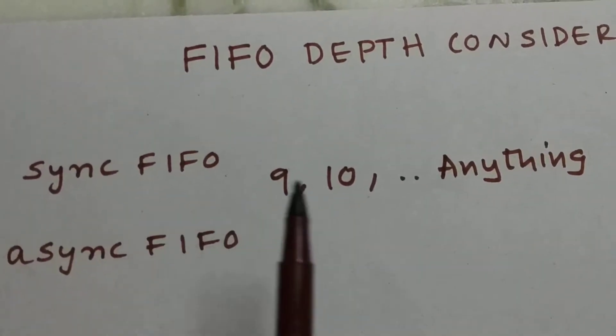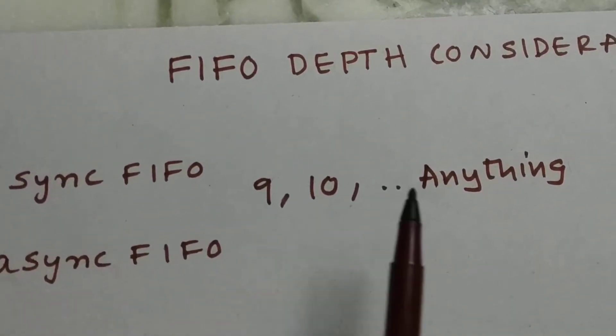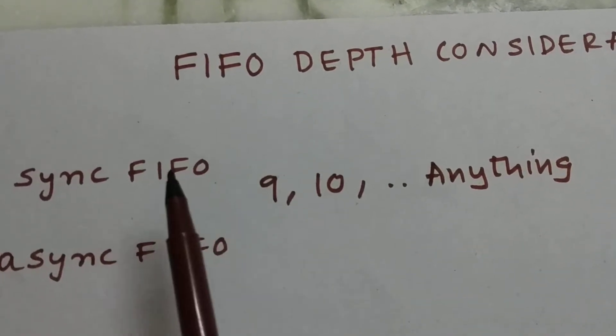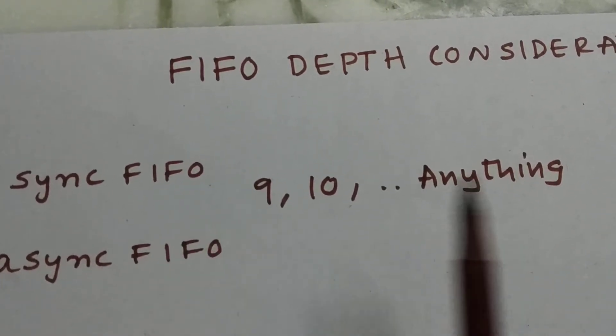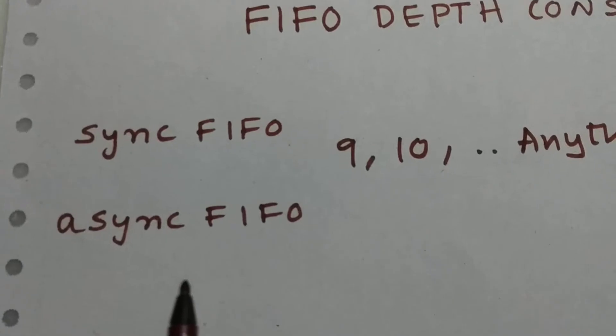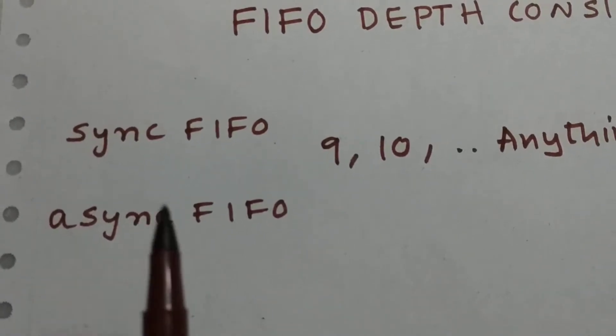What can be the depth of a FIFO? In synchronous FIFO, the depth can be anything: 9, 10, 11, 12, anything. The depth of the synchronous FIFO has no problem with the depth, but there is a small consideration with asynchronous FIFO.